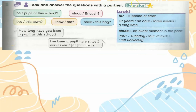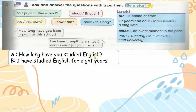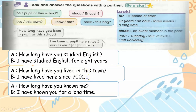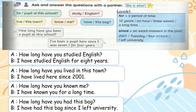Ask and answer the questions with your partner. For example: How long have you been a pupil at this school? I've been a pupil here since I was 7, or I've been a pupil here for 4 years. How long have you studied English? I have studied English for 8 years. How long have you lived in this town? I have lived here since 2001. How long have you known me? I have known you for a long time. How long have you had this bag? I have had this bag since I left university.